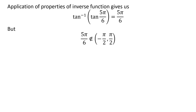But 5 times pi upon 6 does not belong to the open interval of minus half of pi and half of pi, as the range of the inverse tangent function is the open interval of minus half of pi and half of pi. So 5 times pi upon 6 is not the solution.